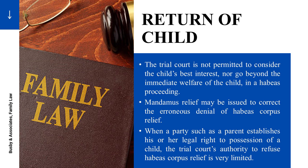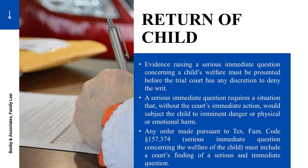Mandamus relief may be issued to correct the erroneous denial of habeas corpus relief. Mandamus is an appellate court proceeding to correct the error of the trial judge. When a party, such as a parent, establishes his or her legal right to possession of a child, the trial court's authority to refuse habeas corpus relief is very limited. Evidence raising a serious, immediate question concerning a child's welfare must be presented before the trial court has any discretion to deny the writ.